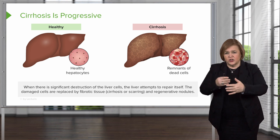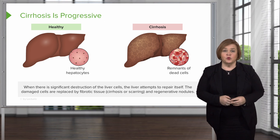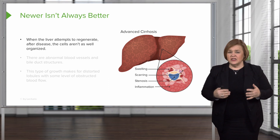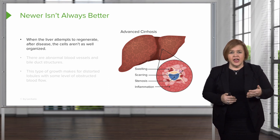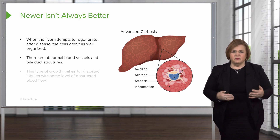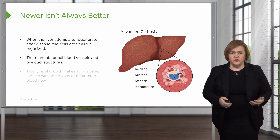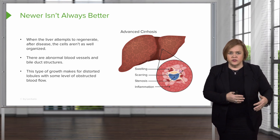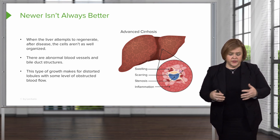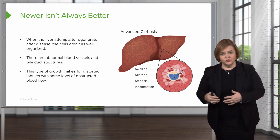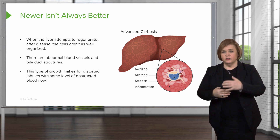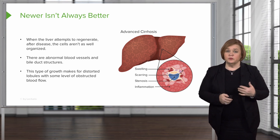The pressure inside that liver is going to cause things to back up through the entire portal system. When the liver tries to regenerate itself after damage, newer isn't always better — the cells just aren't as well organized. There are abnormal blood vessels and bile duct structures. They don't flow freely, and it's this kind of growth after the destruction that makes these distorted lobules and creates some level of obstructed blood flow. Depending on how far advanced the cirrhosis is, at first it might not be noticeable, but as the scarring progresses it will become very noticeable in your patient's symptoms.